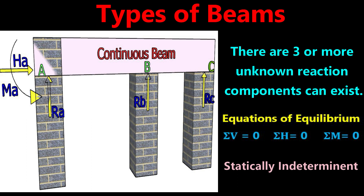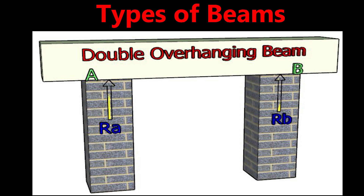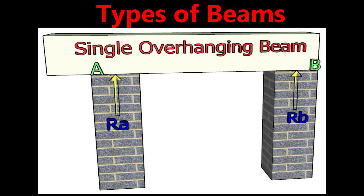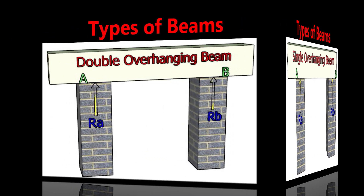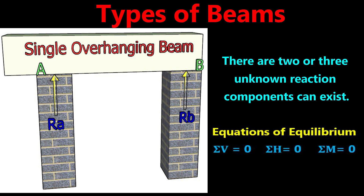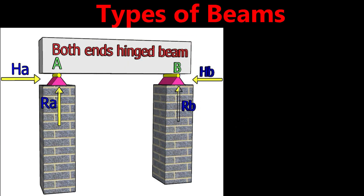The fifth type is the overhanging beam. If a beam projects beyond the support — which may be a simple, roller, or pinned support — it is called an overhanging beam. The overhang may be on one side only (single overhanging) or on both sides (double overhanging). Two or three unknown reaction components exist and can be determined using equations of equilibrium. Overhanging beams are generally used for shades or balconies in residential buildings.